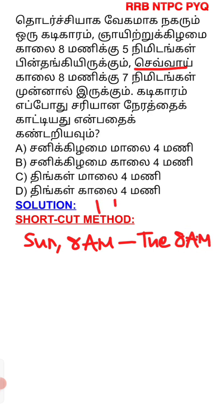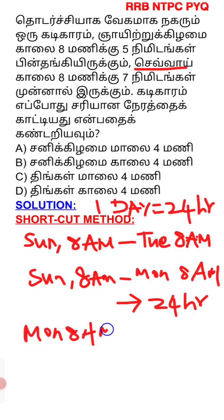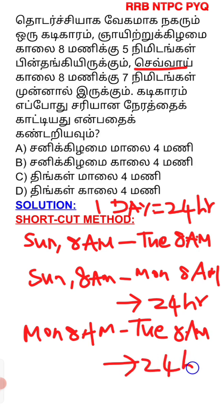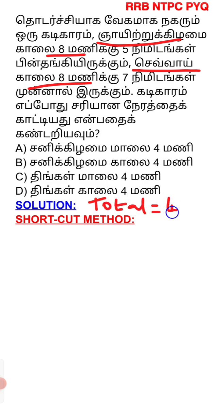The clock will start Tuesday morning. From Sunday to Tuesday is 24 plus 24, which equals 48 hours. That is the shortcut formula.